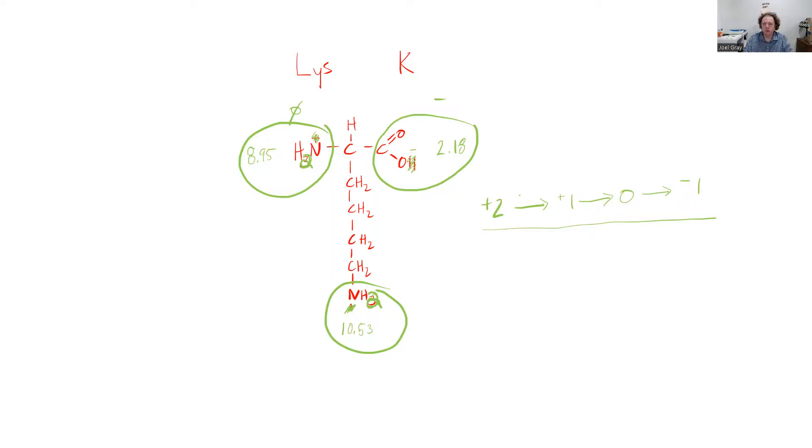+2 to the predominant form being +1. That's going to take place when my pH is equal to my first pKa, which is 2.18. So I like to write my pKa values at each one of these junctions.